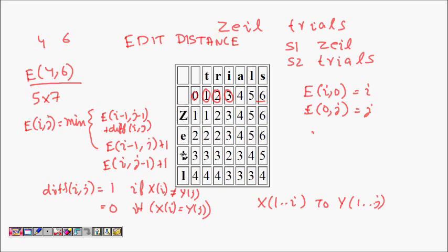To calculate e(i, j) we need e(i-1, j), e(i, j-1), and e(i-1, j-1) diagonally. So if we go from left to right and top to bottom, we can fill out this matrix of size (m+1) × (n+1) from top to bottom and left to right.